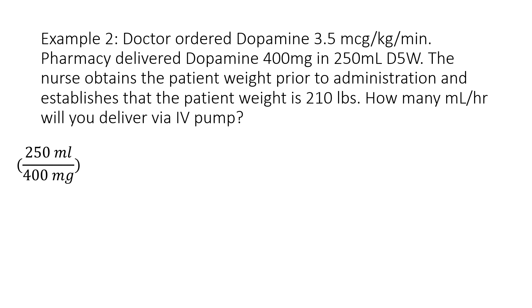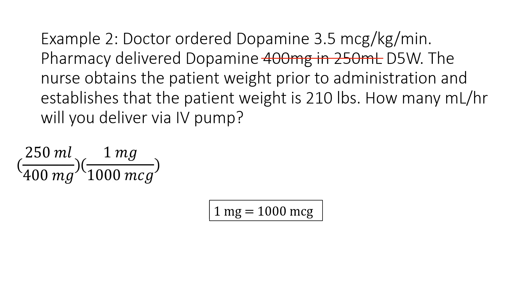I like to mark out what I've used so I don't get confused. I don't want milligrams, so I'm going to locate milligrams in the problem. This is why I like to mark it out — technically I do have it, but this conversion has already been used. So this is where you must know the conversion from milligram to microgram, since I have micrograms in the problem. One milligram is equal to 1000 micrograms. Since I want milligrams to cancel, I'm going to put 1 milligram on top and 1000 micrograms on the bottom, so my milligrams will cancel. Next, I don't want micrograms, so I locate it in the problem — the order is 3.5 micrograms per kilogram per minute. I want micrograms to cancel, so I put 3.5 micrograms on top and 1 kilogram and 1 minute on the bottom. I'll mark this out since I've used it.